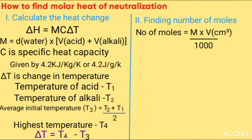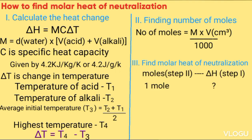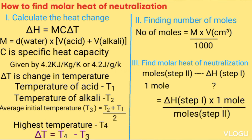In the last step, find the molar heat of neutralization. Take the moles obtained in step 2 and set them equal to the enthalpy change from step 1. Then cross multiply to find what 1 mole corresponds to, and give your answer in kilojoules per mole.